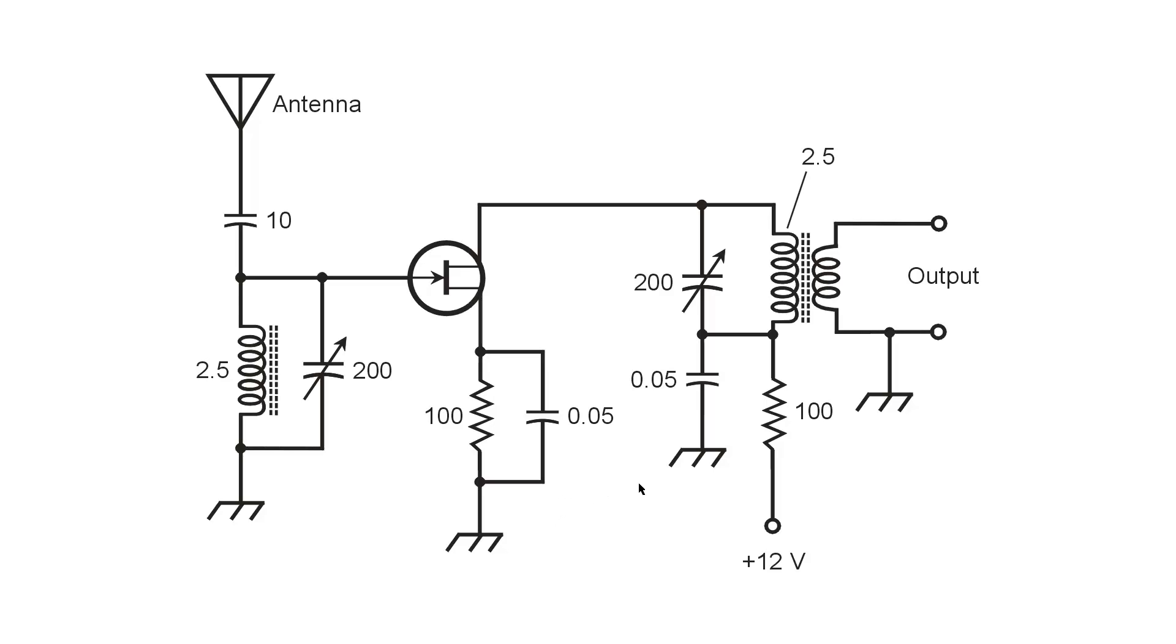Capacitance values are in microfarads if less than 1, for example 0.05 microfarads here, and in picofarads if greater than 1, 200 picofarads, 10 picofarads, etc. Resistances are in ohms, 100 ohms for example. There are two of those in the whole circuit. And inductances are always in microhenries, 2.5 microhenries here, 2.5 microhenries here.